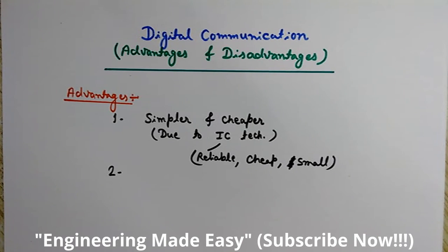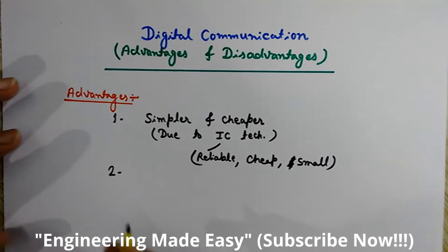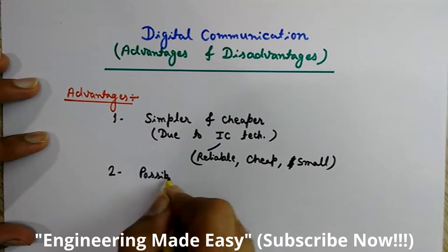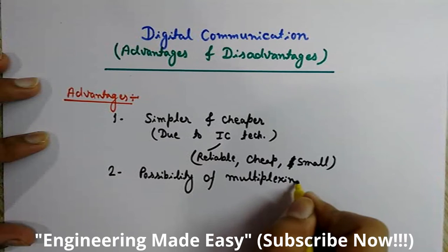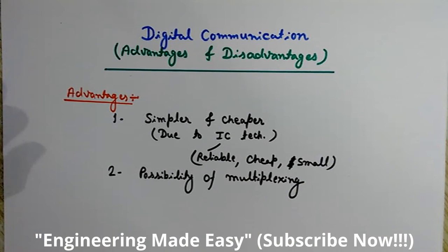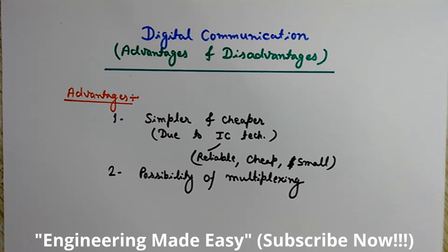The second advantage is the possibility of multiplexing. In digital communication, it is possible to use multiplexing to merge speech, video, and other forms of data for transmission over a common channel. Multiplexing may be of different types like frequency division multiplexing, time division multiplexing, or code division multiplexing.